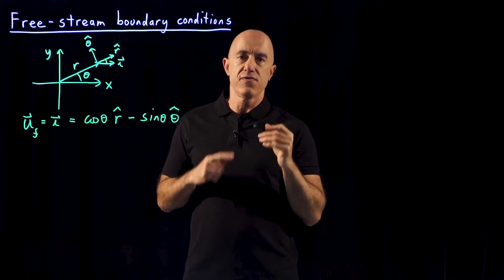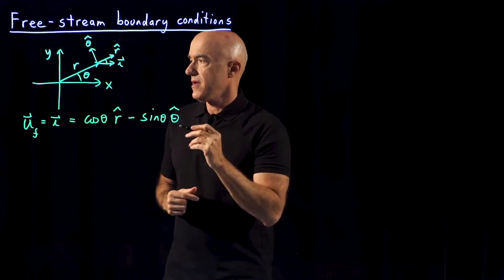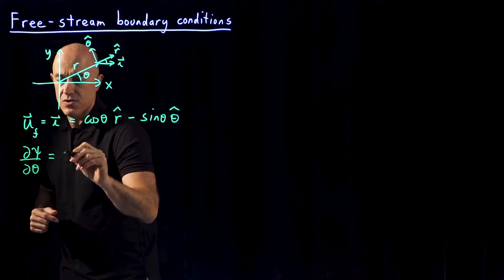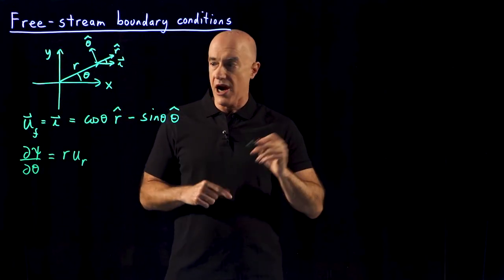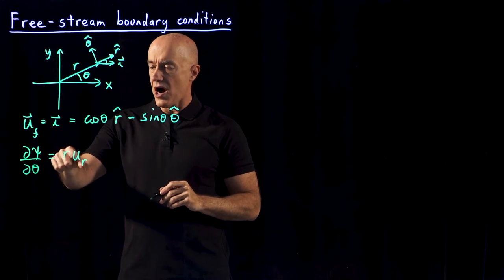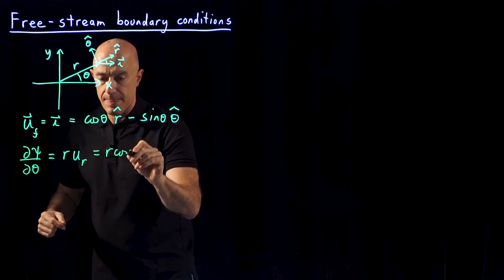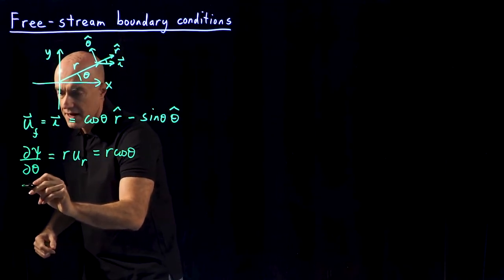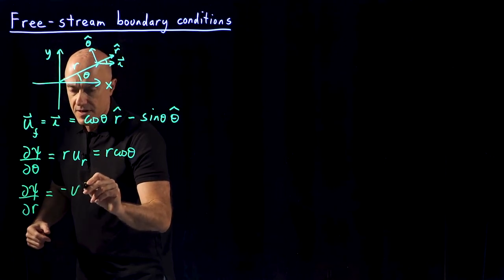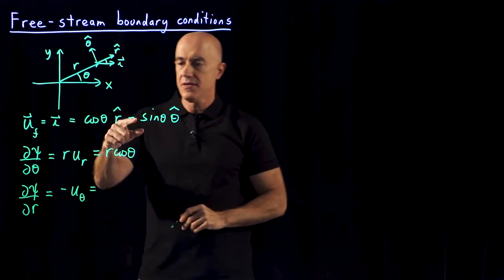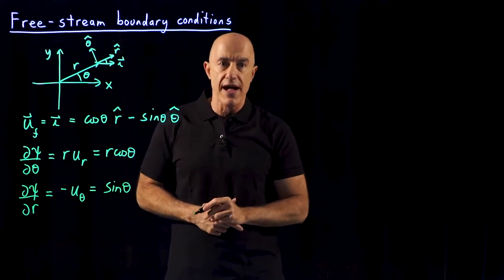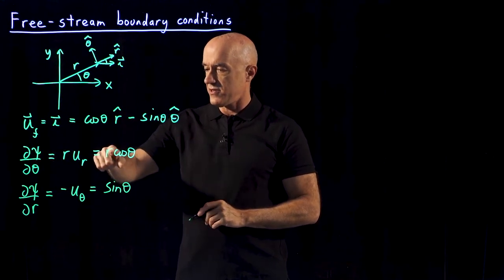What we really need is the free stream values of the stream function. We use the fact that the partial derivative of the stream function with respect to theta is equal to r times the velocity in the r hat direction. So for free stream values, r u_r is r cosine theta. Similarly, the partial derivative of the stream function with respect to r is equal to the negative of the velocity component in the theta direction — that's the negative of negative sine theta, so that equals sine theta. The derivative with respect to theta is r cosine theta and the derivative with respect to r is sine theta.